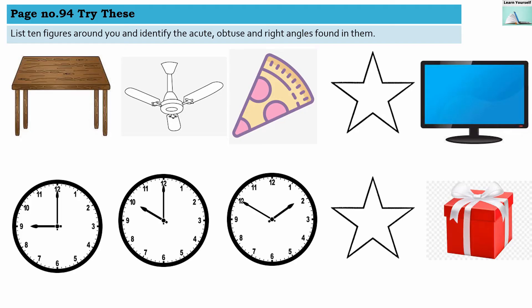Welcome to Learn Yourself, page number 94, Try This. List 10 figures around you and identify the acute (less than 90 degrees), obtuse (greater than 90 degrees), and right angle (90 degrees) found in them.